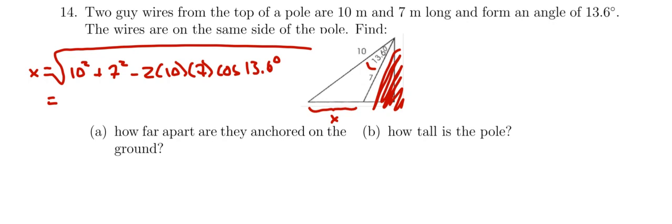This is going to be how far apart they're anchored there. So I just encourage you once again, try to do all of this in one step on your calculator. So enter in the square root of, and then 10 squared plus 7 squared minus 2 times 10 times 7 multiplied by the cosine of that angle in between. Do it all in one step.